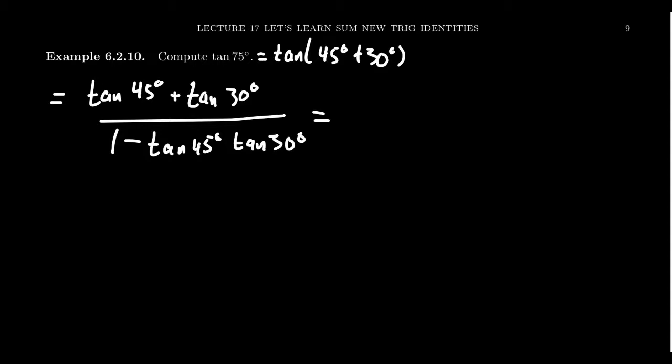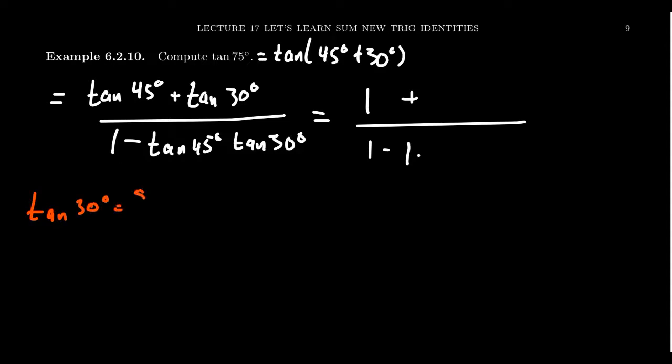Let's compute this. Tangent is sine over cosine. At 45 degrees, sine and cosine are both equal to root 2 over 2, so tangent of 45 degrees equals 1. Plugging that in: 1 plus tangent of 30 degrees, over 1 minus 1 times tangent of 30 degrees. For tangent of 30 degrees, sine of 30 degrees is one half.